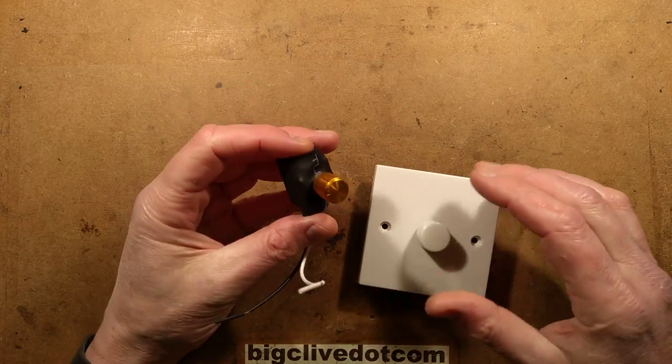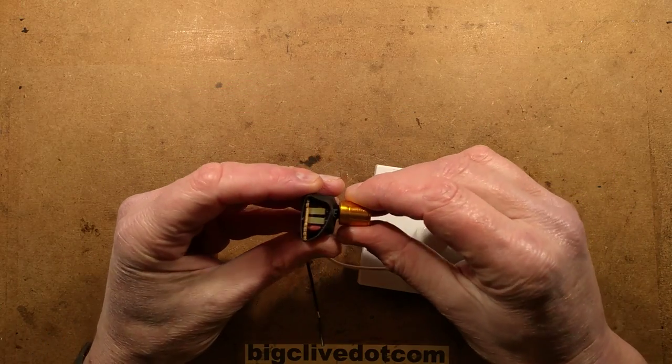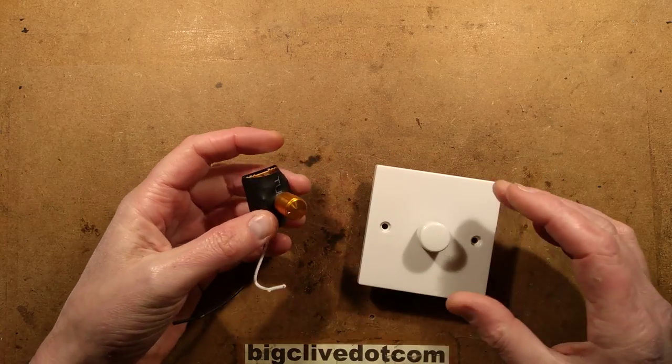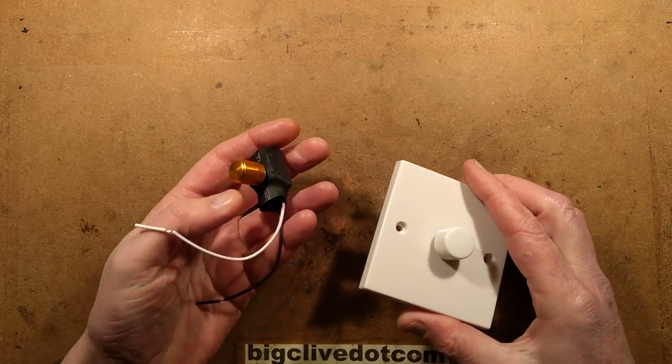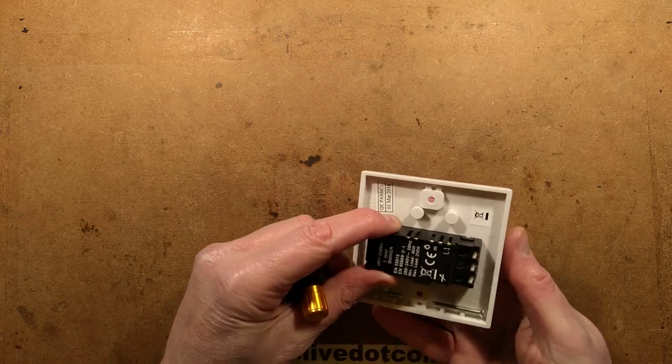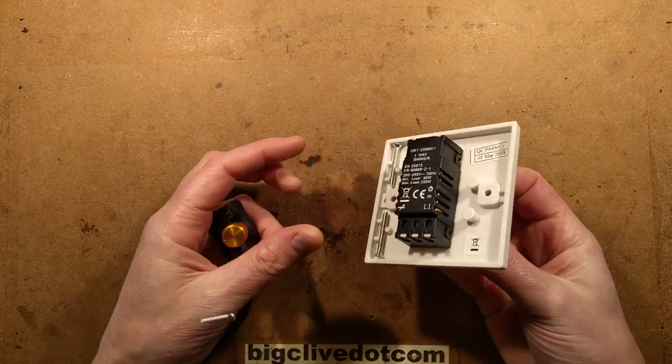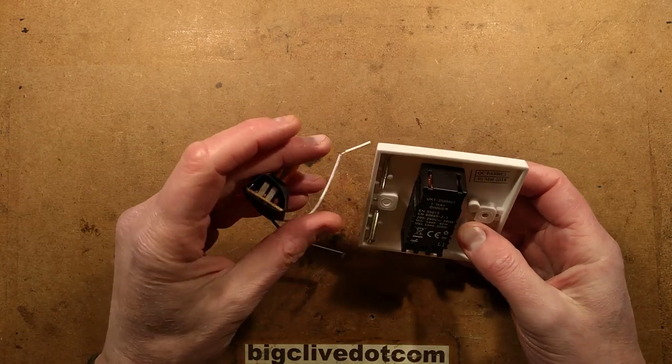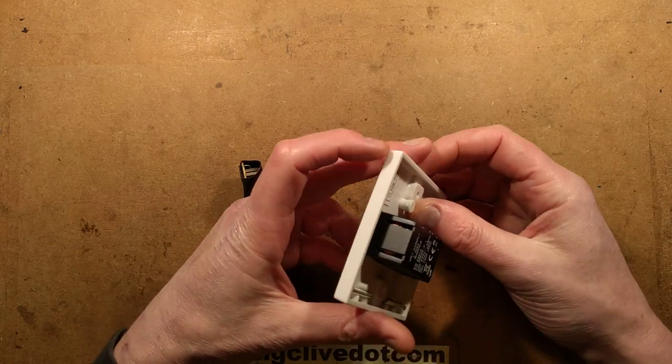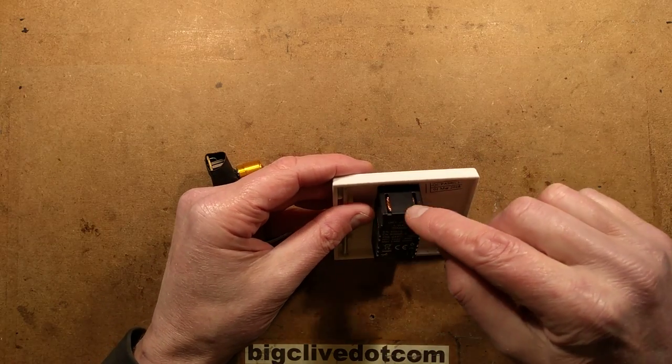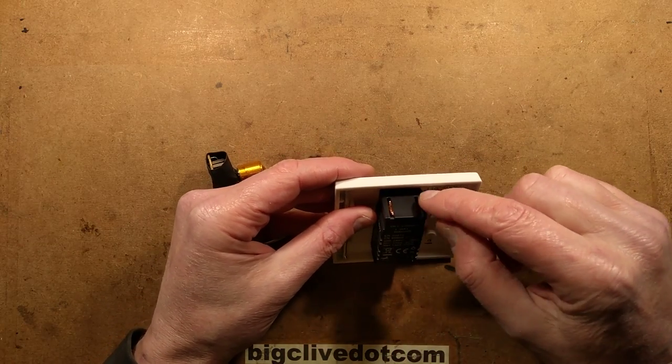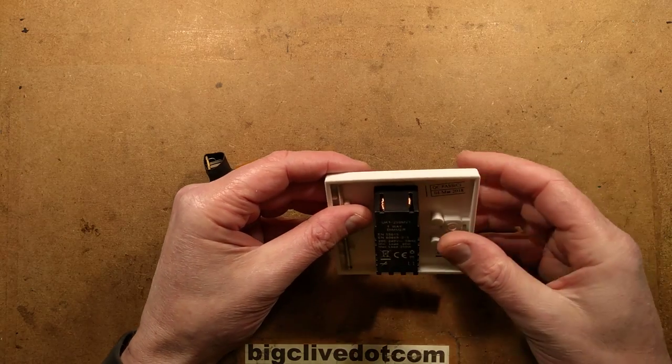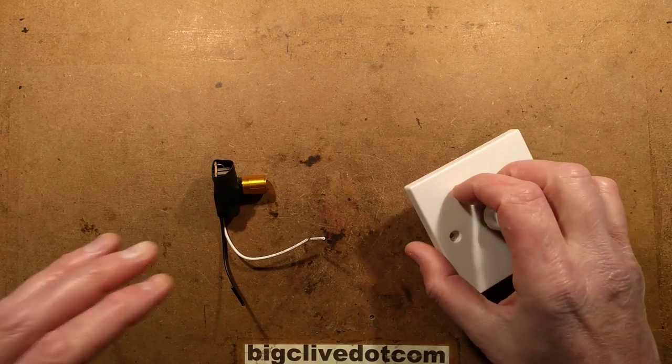I've taken a look at various dimmer modules on eBay in the past and this is one of the smallest and cheapest ones. I thought I'd get one, reverse engineer it, and compare it to the circuitry in a typical compliant British dimmer. The first thing I'm noticing here is that this dimmer has an inductor in it, a little toroidal choke to actually reduce the electrical noise from the switching.